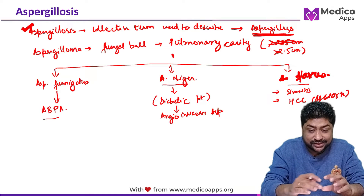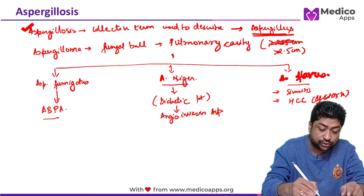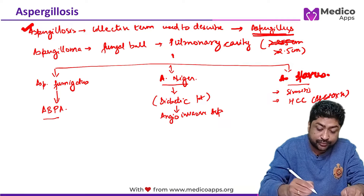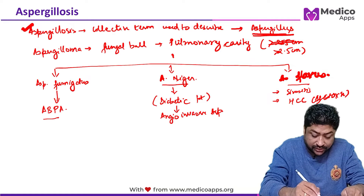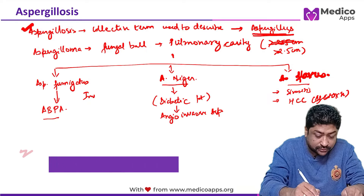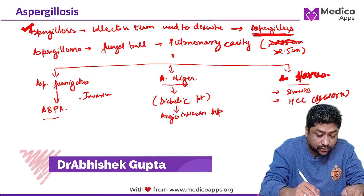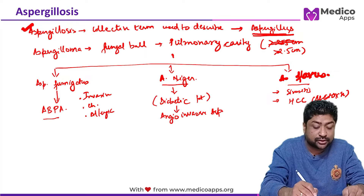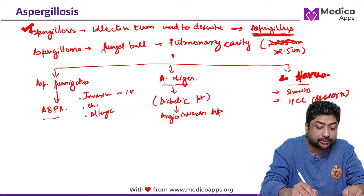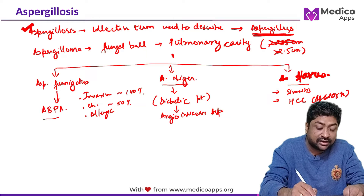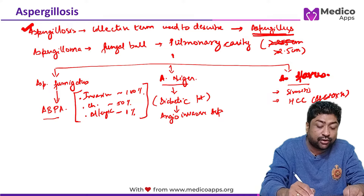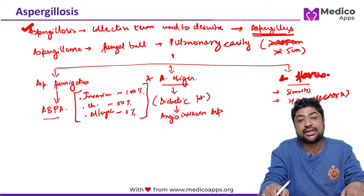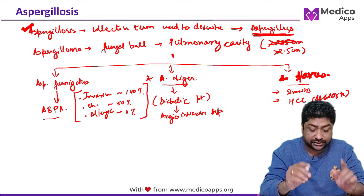The diseases caused by aspergillosis fall into three categories: invasive, chronic, and allergic. In invasive aspergillosis, mortality is close to 100%. In the chronic category, mortality is close to 50%. In allergic cases, mortality is close to 1%. The kind of infection determines the outcome of the patient.